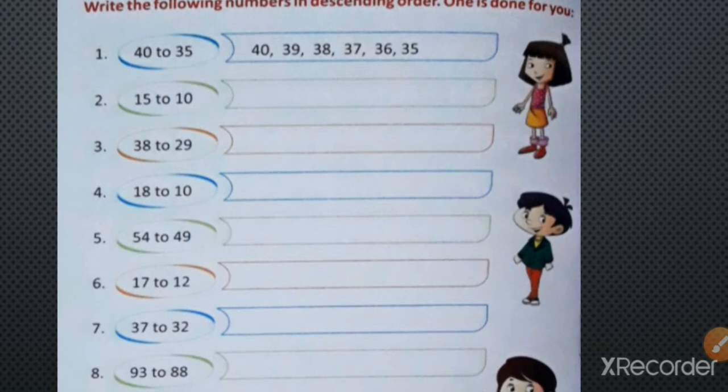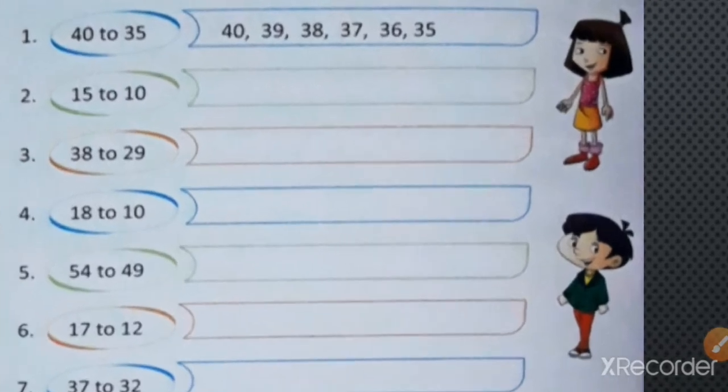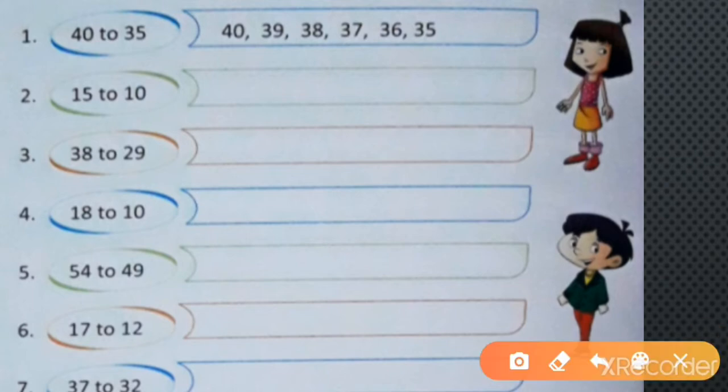Write the following numbers in descending order. Here you have to write the numbers in descending order. You know to write descending order we have to start with the biggest number.